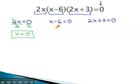We can solve the second equation by adding 6 to both sides. This gives us x equals 6. When x is equal to 6, the middle factor is 0, multiplied by the others will always equal 0.